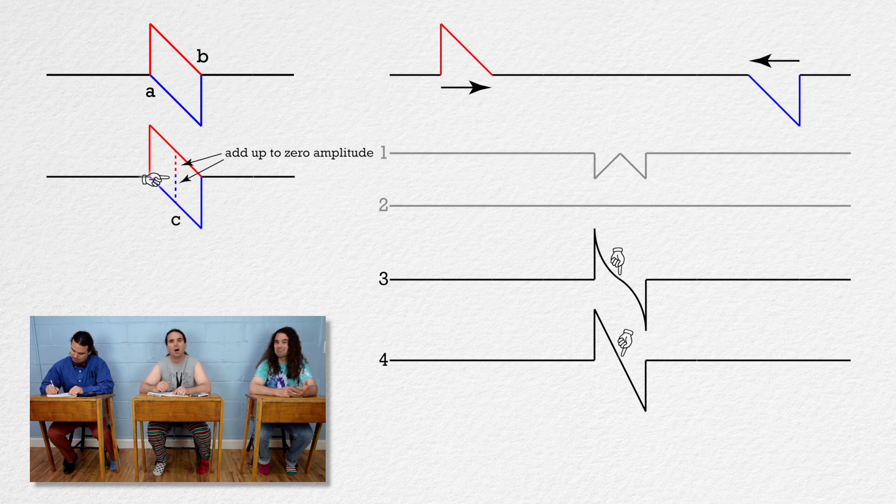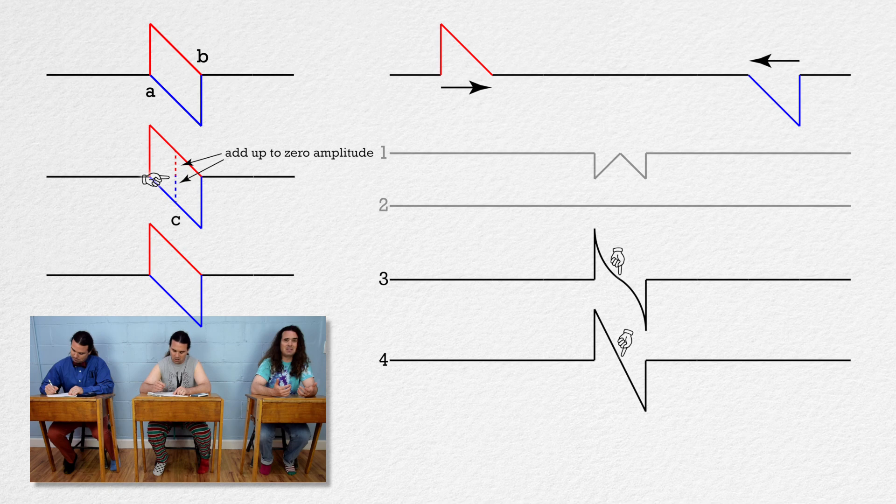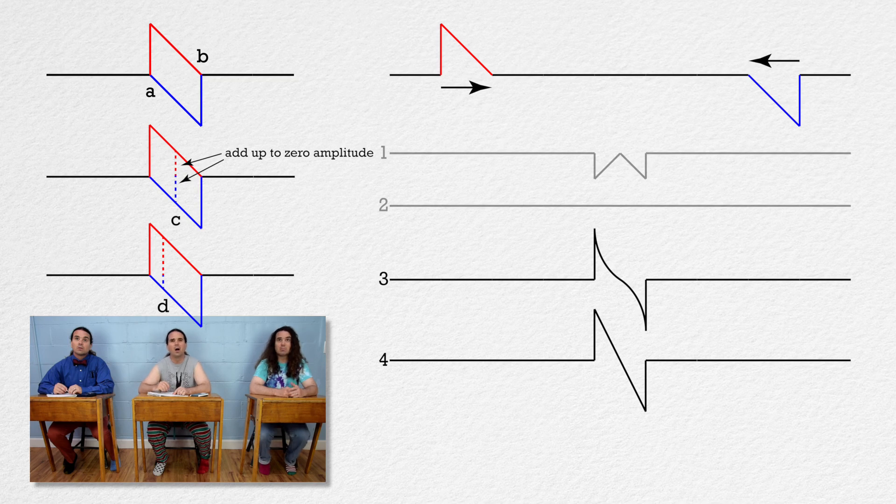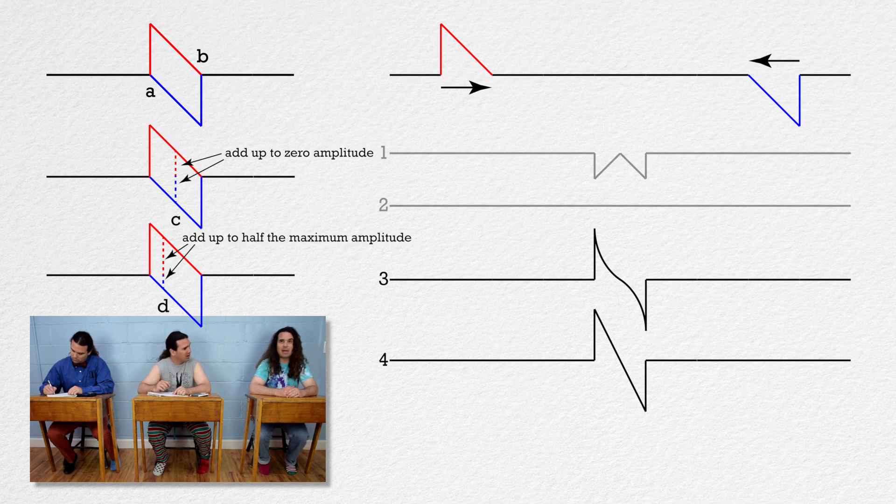Let's say one quarter of the way to the right of the left edge. We'll call it location D. At that point, the red wave is three fourths of the maximum amplitude and above equilibrium. And the blue wave is one fourth of the maximum amplitude and below equilibrium. Those two waves add up to half the maximum amplitude above equilibrium.